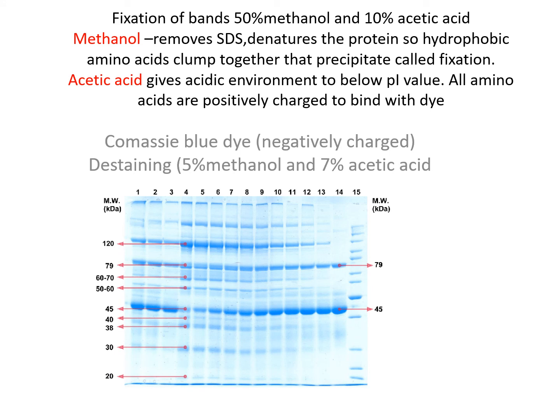After separation of the protein on the basis of molecular weight, the gel is taken out carefully and it is necessary to fix the bands. Fixation means to precipitate or immobilize the bands so they will not diffuse from the gel. Fixation is done with 50% methanol and 10% acetic acid. Methanol removes the SDS, because if SDS is still bound to the protein it will not bind with Coomassie blue dye. Methanol also denatures the protein so hydrophobic amino acids clump together, which precipitates or immobilizes the bands — that is fixation.